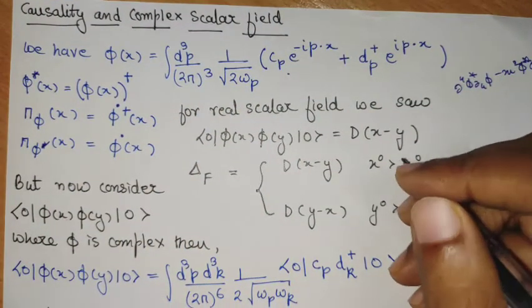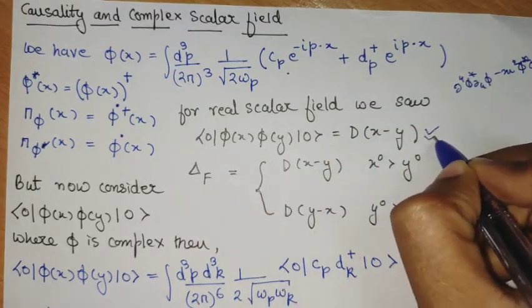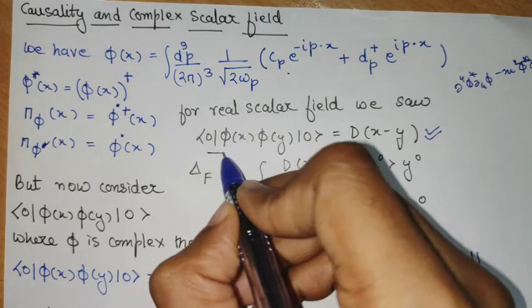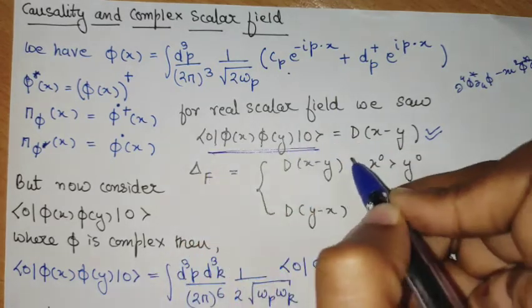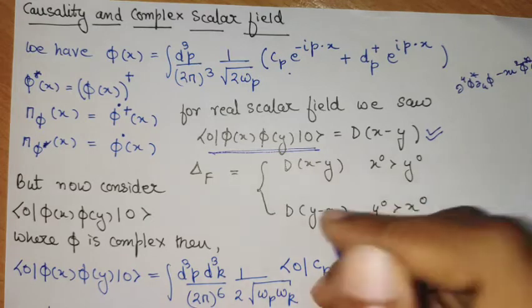Now in the real scalar field, we said that this particular form was the form of the propagator here. Where the propagator, what the propagator did was it made a transformation.